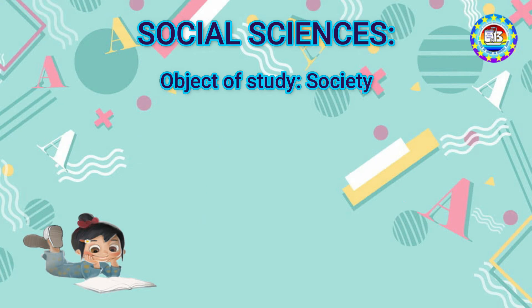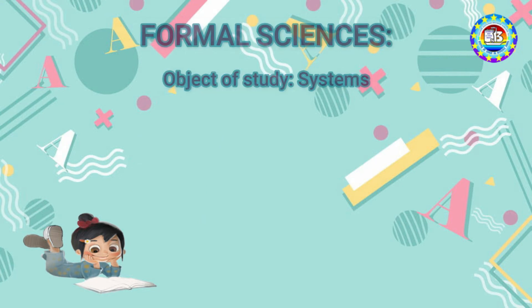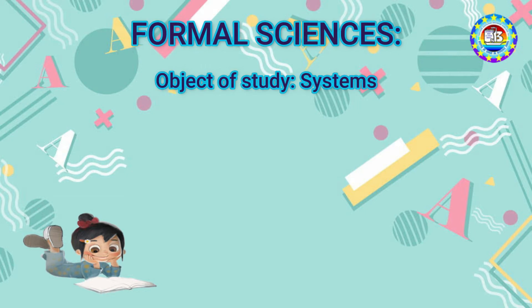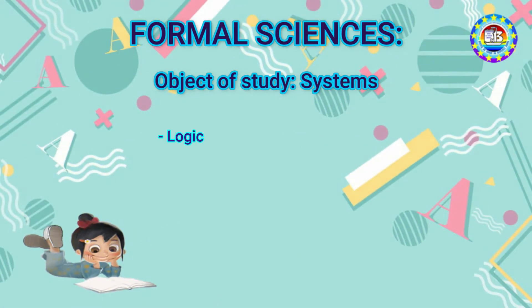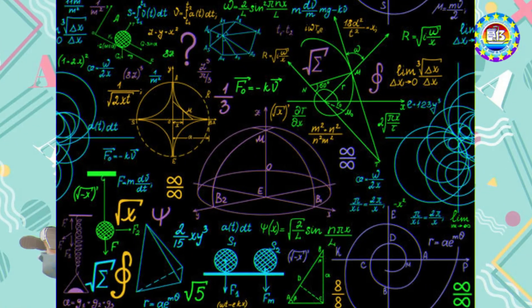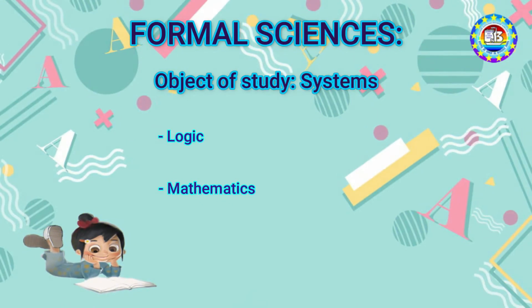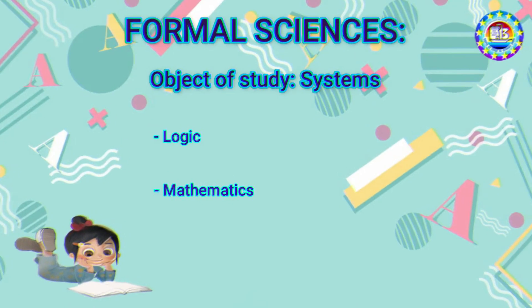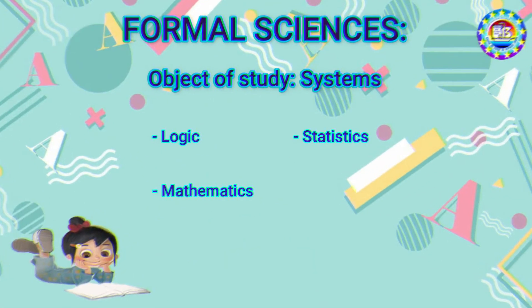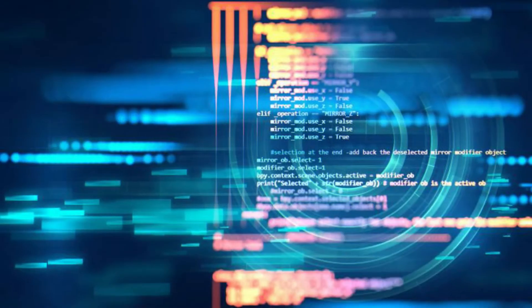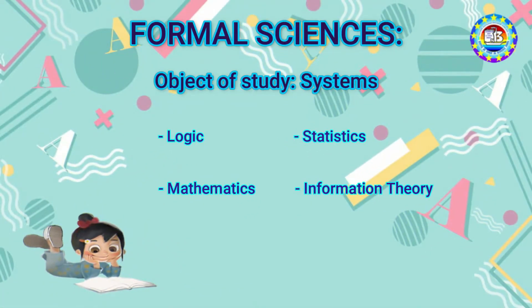The next branch of science is formal science. It's a branch of science studying formal language disciplines, concerned with formal systems. The sciences included here are: logic, mathematics, statistics, and information theory.